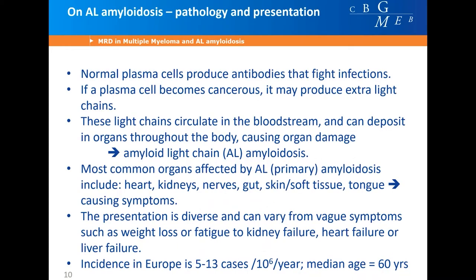On slide 10, amyloid light chain amyloidosis: normal plasma cells produce antibodies that fight infections. If a plasma cell becomes cancerous, it may produce extra light chains that circulate in the bloodstream and deposit in organs throughout the body, causing organ damage. The most commonly affected organs are the heart, kidney, nerves, gut, skin, soft tissue, tongue. Presentation is diverse — from vague symptoms like weight loss or fatigue to kidney failure, heart failure, and liver failure. The incidence in Europe is five to thirteen cases per million persons per year, with a median age of 60 years.